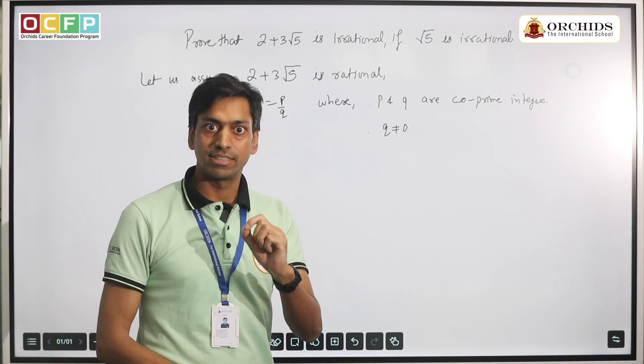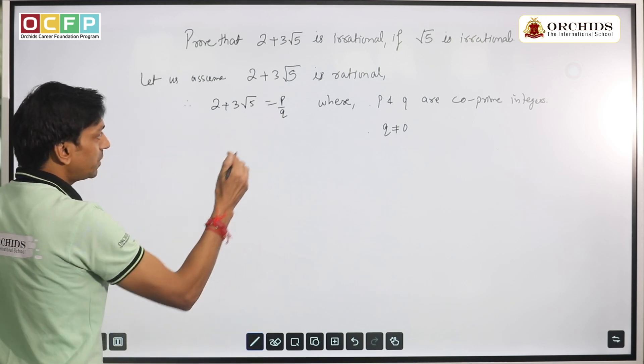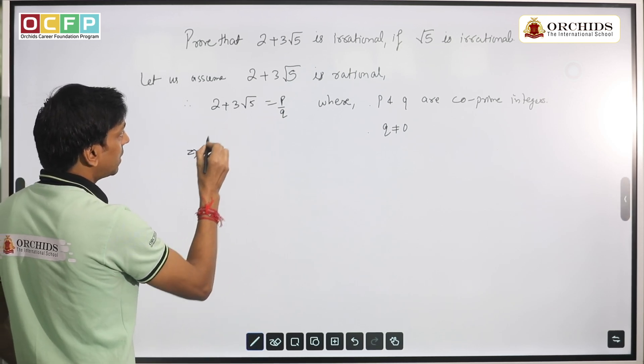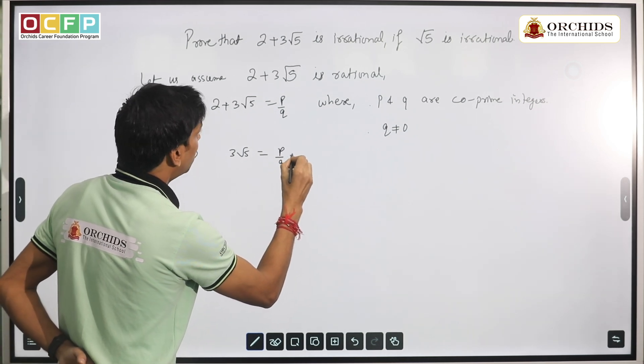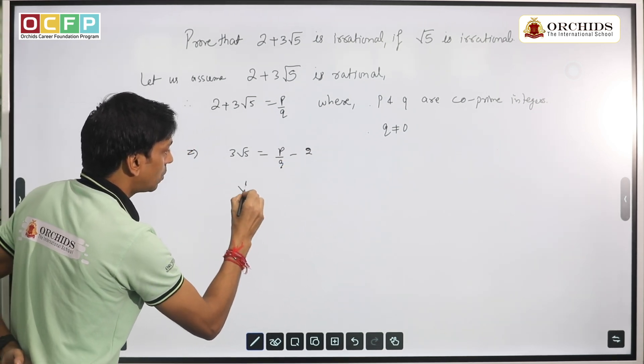After solving this, this implies that 3√5 can be written as p/q - 2. So finally, if I solve, what I will get is √5 = (p - 2q)/(3q).